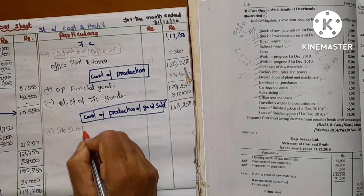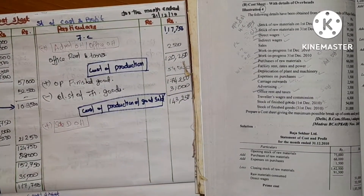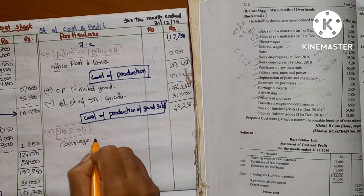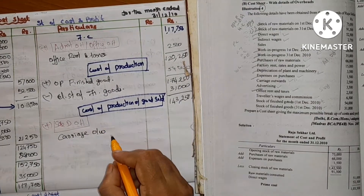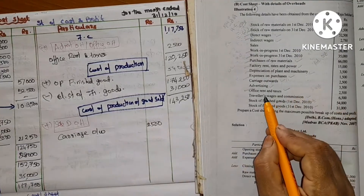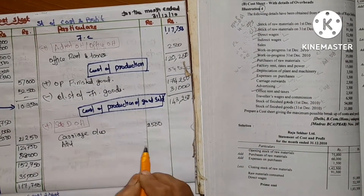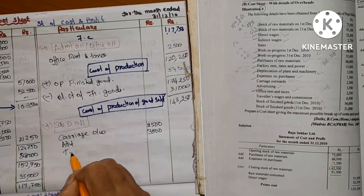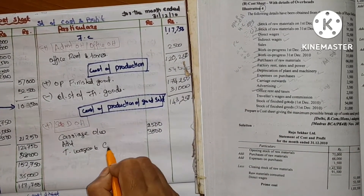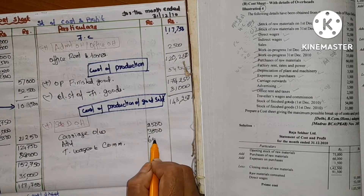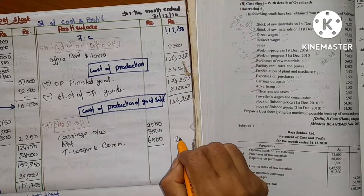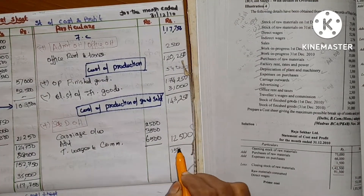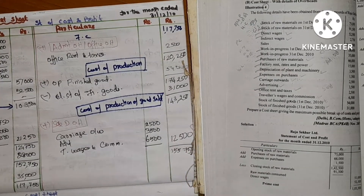Selling and distribution overhead: carriage outward 2,500; advertising 3,500; travelers wages and commission 6,500; total selling overhead 12,500. Total cost of sales is 1,55,750.